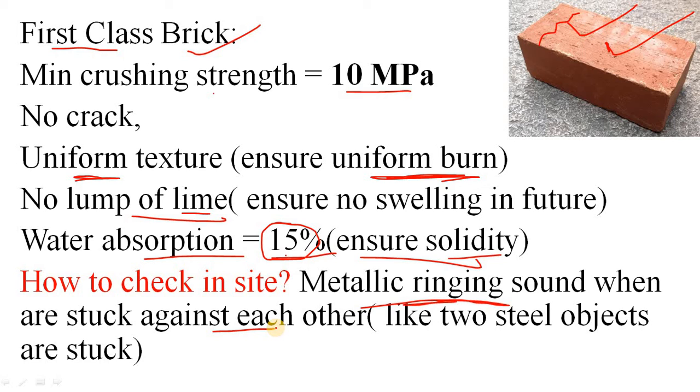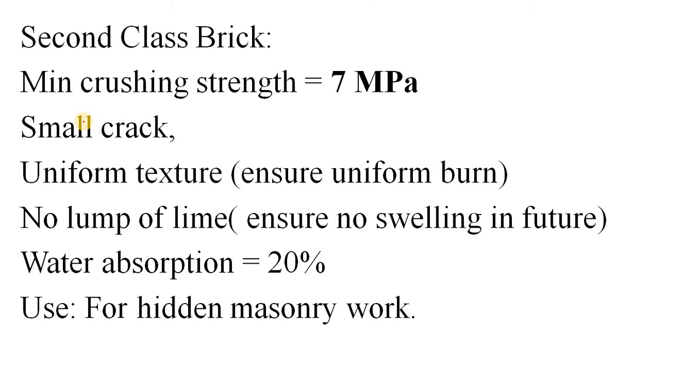Second is second class brick. The main difference from first class brick is small cracks are present within the bricks, and water absorption is 20%. In case of first class brick it was 15%, so obviously here the porosity is more. As I said earlier, more porosity means lower crushing strength, and here is the proof: in case of first class brick it was 10 MPa, but here it is only 7 MPa. In case of texture, it is almost uniform, so first class and second class are almost the same in this regard.